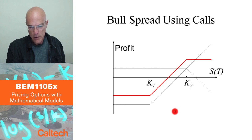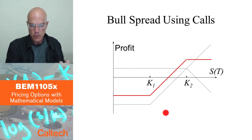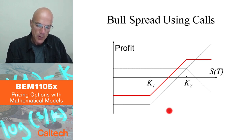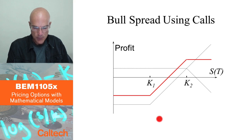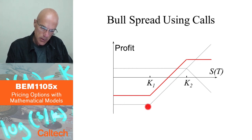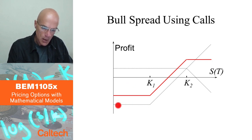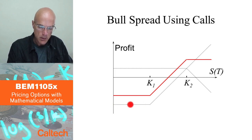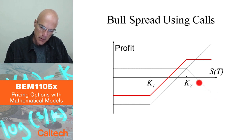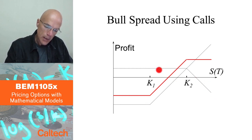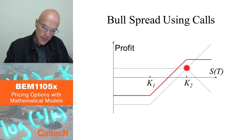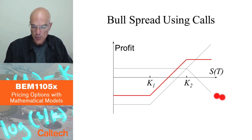Graphically, you can do this using call options. If you buy a call with strike price K1 — zero below K1, and you pay something for it, which is why it's moved down below zero, because if it's not exercised you lost the initial premium — and then you sell a call with strike price K2, which is why that part is above zero: you get the initial price for selling this call. If the stock goes up, you are losing money on the call you sold.